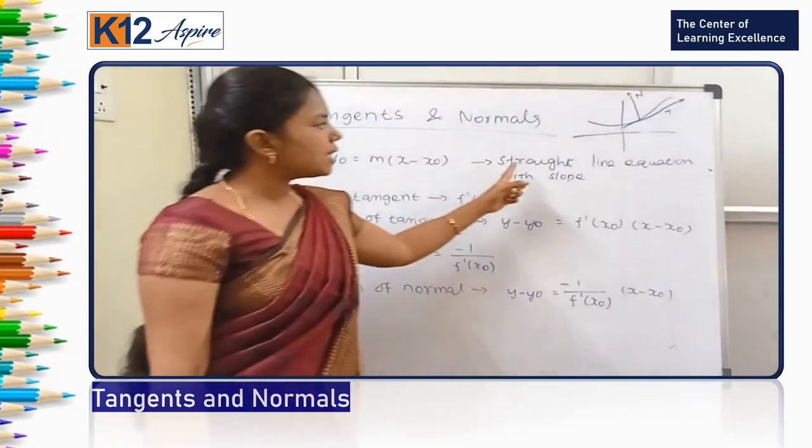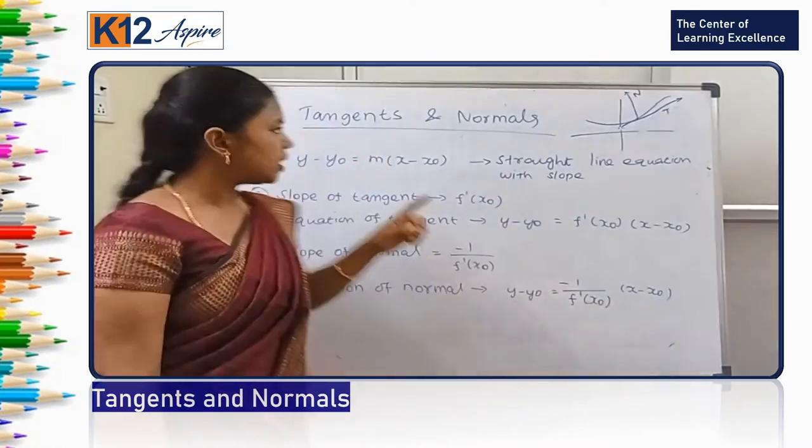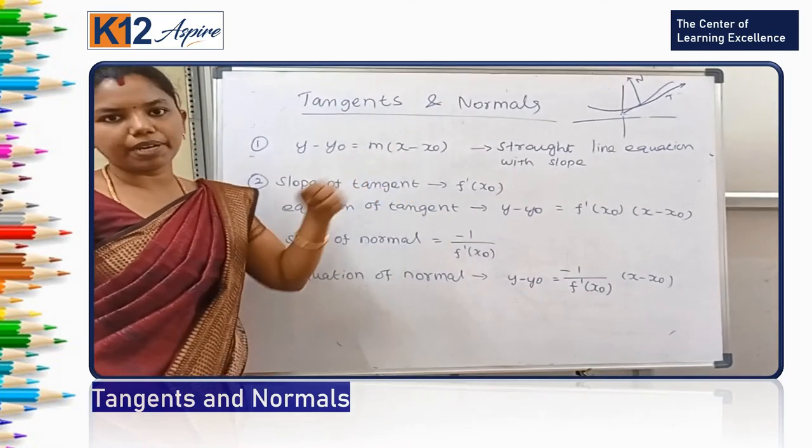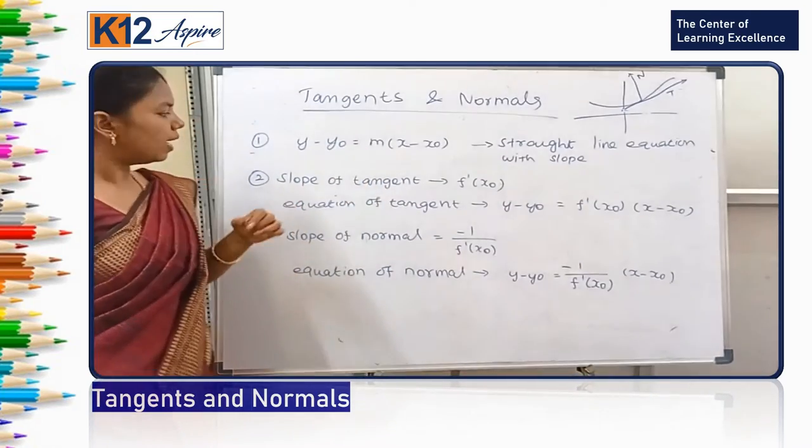First, you know the straight line equation with the slope. What is that? y minus y₀ equals m times (x minus x₀). So m is the slope.